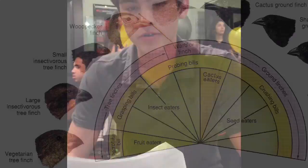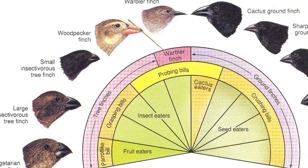How does Lamarck propose that species evolve? Lamarck suggested that organisms could change during their lifetimes by selectively using or not using various parts of their bodies. He also suggested that individuals could pass these acquired traits onto their offspring, enabling species to change over time. Adaptation is a heritable characteristic that increases an organism's ability to survive and reproduce.